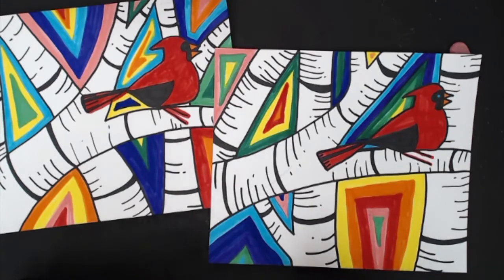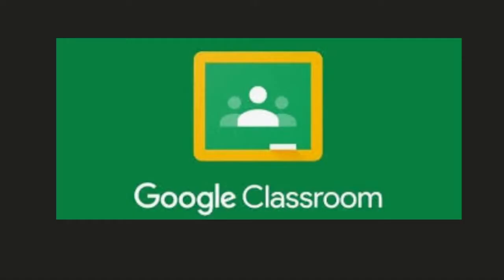Once you are all done filling in your negative space your artwork will be complete. If you can make sure that you take a photo of your artwork, go back to the Google Classroom and add that photo to the assignment. You will not get credit simply for watching the video. You need to make sure that you turn in a photo of your work to receive credit for this week's art assignment.